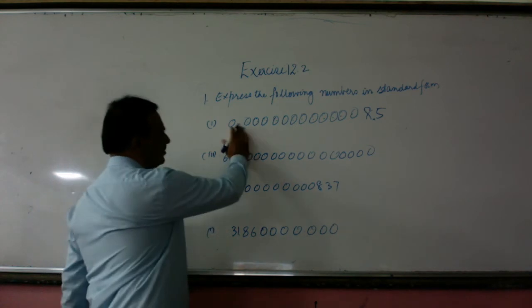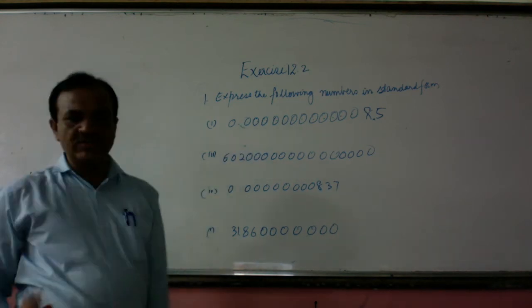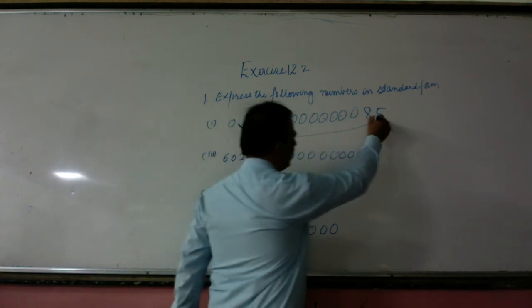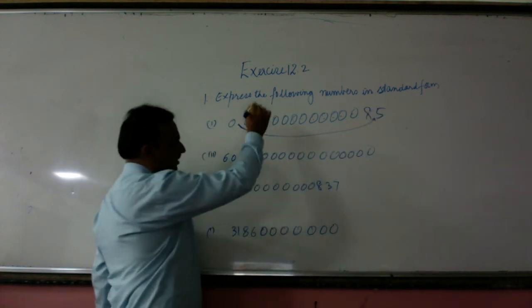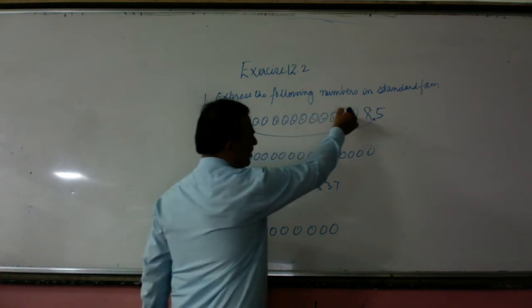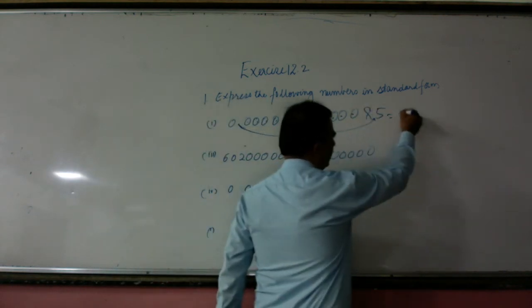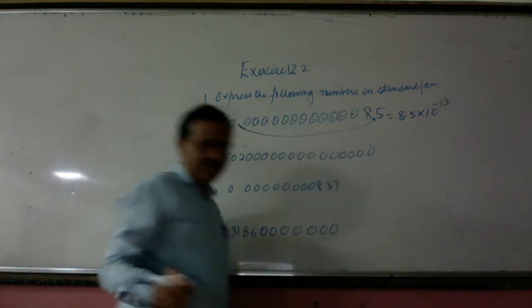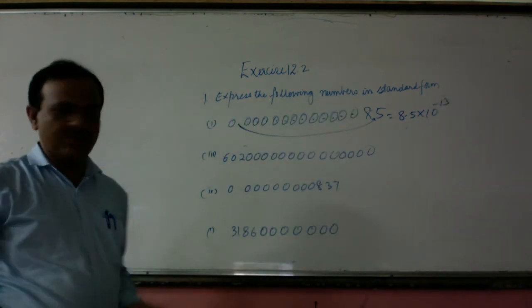How 0.00... is a very small number, so we use a negative sign. This point is here, it is to be shifted to this place. So how many times we are shifting? 1, 2, 3, 4, 5, 6, 7, 8, 9, 10, 11, 12, 13. So the answer will be 8.5 × 10^-13 because it is a smaller number, so we have to use a negative sign.